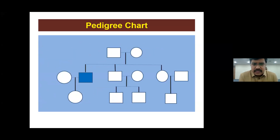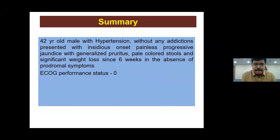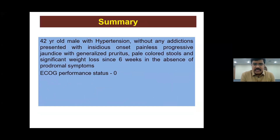There are no similar complaints in the family, no history of gallstones or any other malignancy. Father expired at age 70 with natural causes. To summarize: this is a 42-year-old male, known hypertensive, without addictions, presenting with insidious onset, painless, progressive jaundice with generalized pruritus, pale-colored stools, and significant weight loss since six weeks, in the absence of prodromal symptoms, with ECOG performance status of 0.